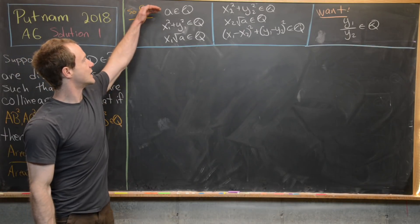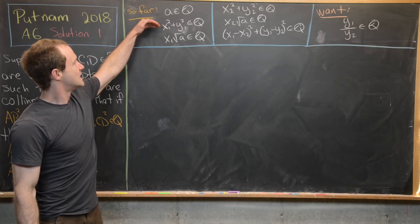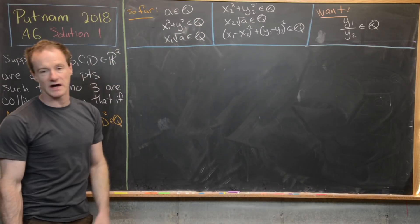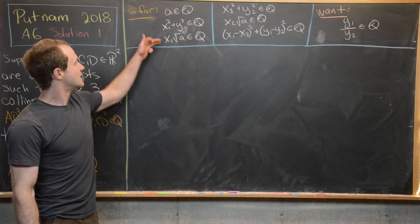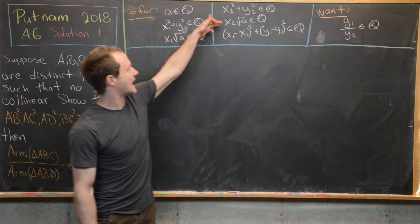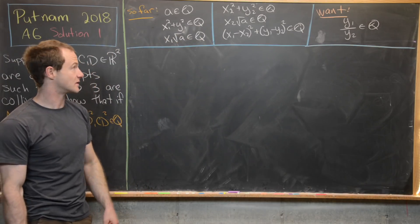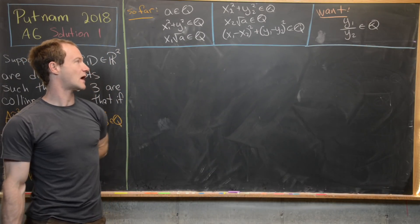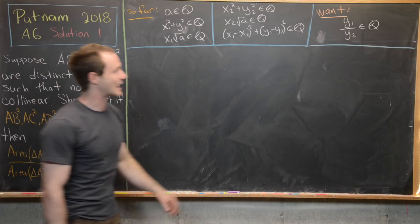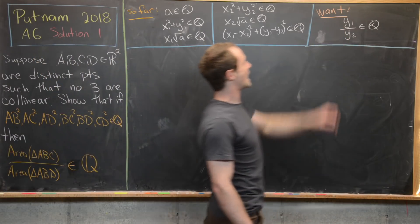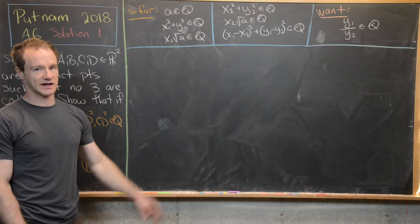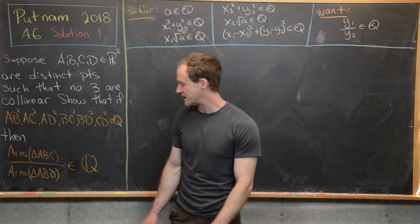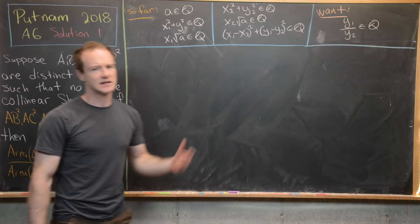To summarize where we are: a is rational; x1² + y1² and x2² + y2² are rational; √a · x1 and √a · x2 are rational; and (x1 − x2)² + (y1 − y2)² is rational. Our goal remains to show y1/y2 is rational.